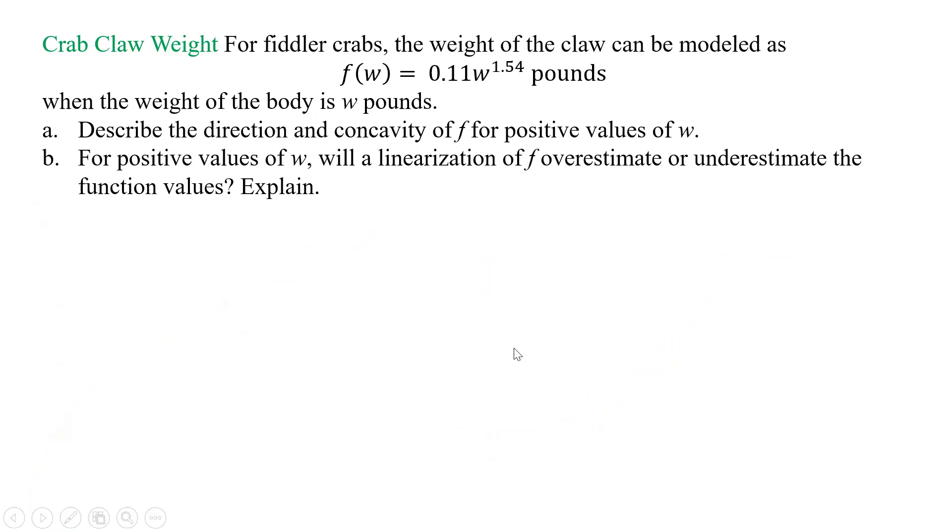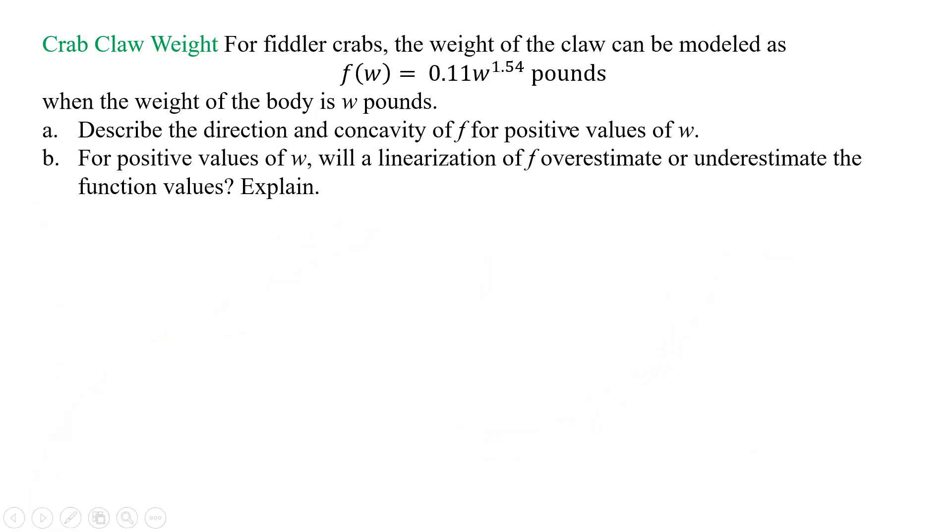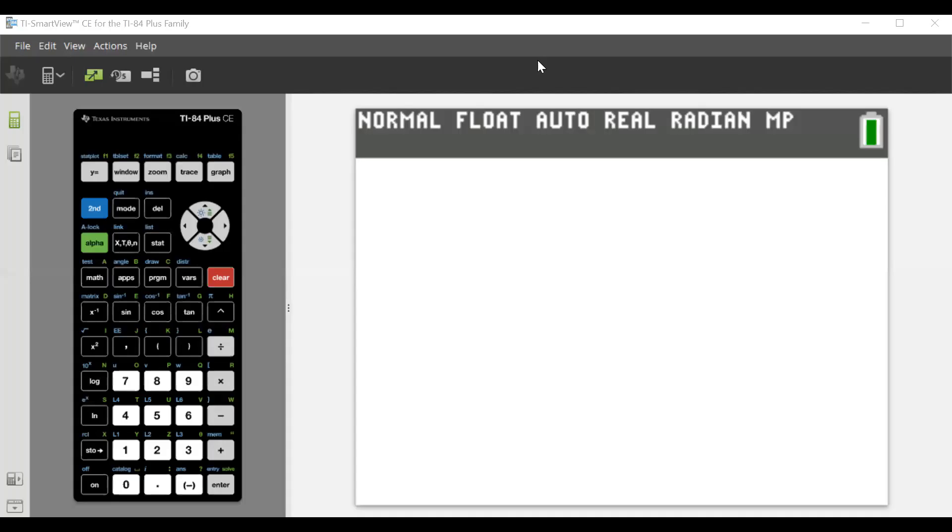So this one says, for fiddler crabs, the weight of the claw can be modeled as 0.11W to the 1.54 pounds, where the weight of the body is W pounds. And they want us to describe the direction and concavity of F for positive values of W. All right. So let's go get our calculator and actually do that.